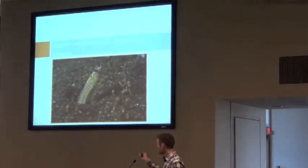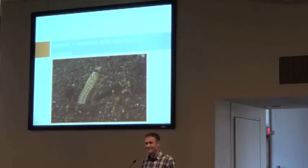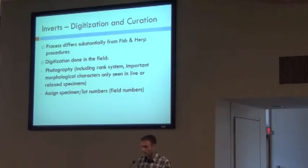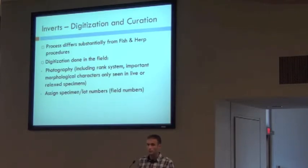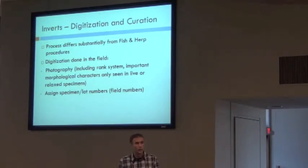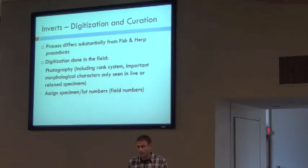Now, inverts. The process differs substantially from what we've seen for fish and herps. A lot of digitization is front-loaded — it's done in the field. They take hundreds of thousands of photographs within the last 10 years and include a rank system. The reason they're taking all these photos in the field is that certain morphological characters in these invertebrates can oftentimes only be seen while the animals are alive, and these are important characteristics for identification. So they've got to get photographs while animals are alive or recently anesthetized, and they have a very assembly-line type production in the field.